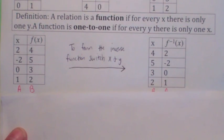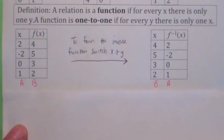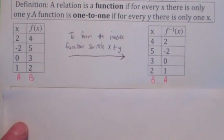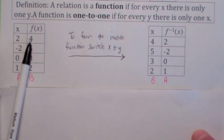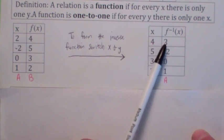And what's nice about having a one-to-one function, you can actually form a new function. It's called the inverse function. This is how you do it. You take all the points in the function f of x and you switch them. So if f of 2 equals 4, when you switch it, 4 goes to 2. We say f inverse of 4 equals 2.